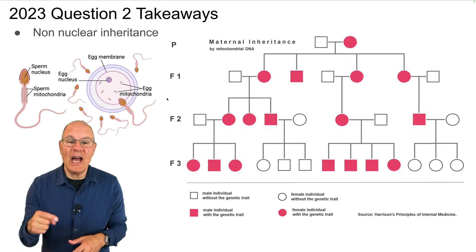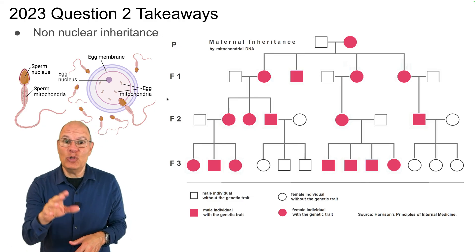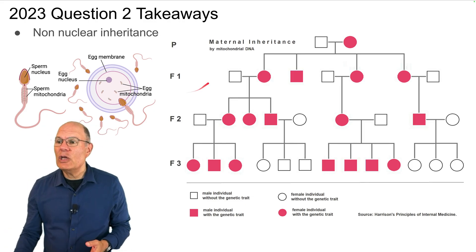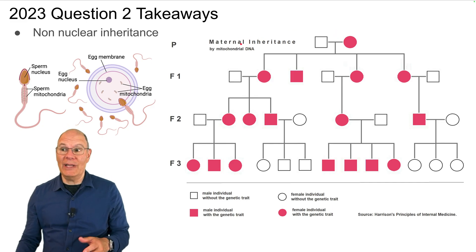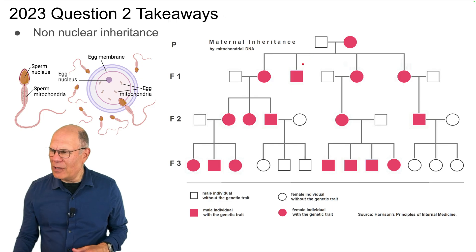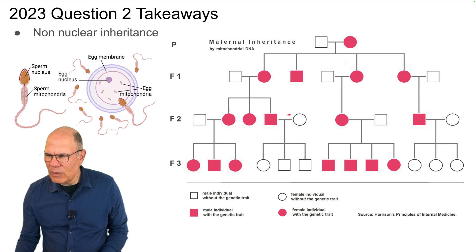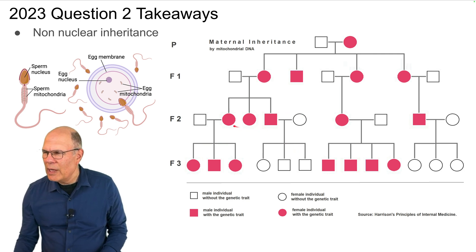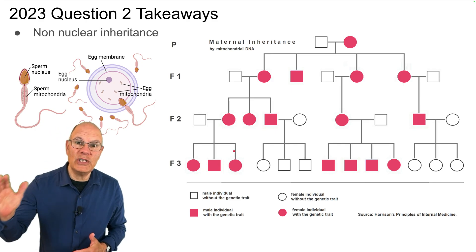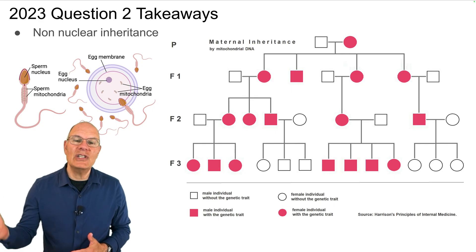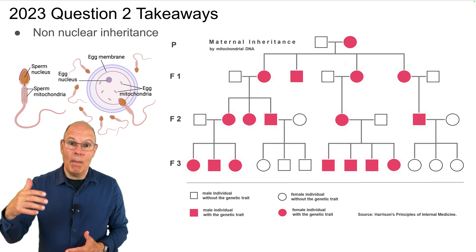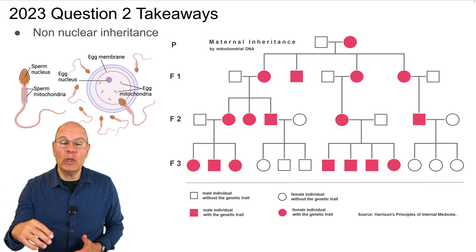Another takeaway involves non-nuclear inheritance. You might see a pedigree chart where the mother passes a condition to all her children, but a male with the condition doesn't pass it on to any of his children. That inheritance pattern indicates non-nuclear, mitochondrial inheritance — derived solely from the mother.